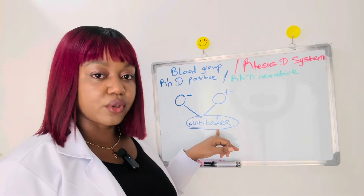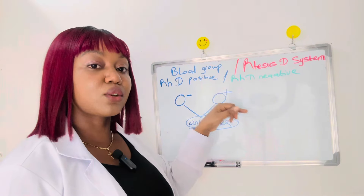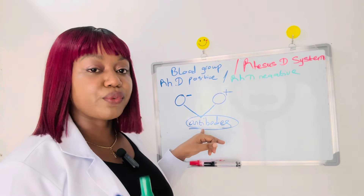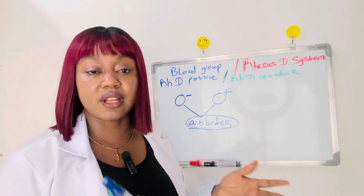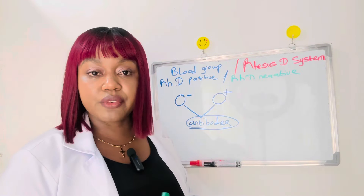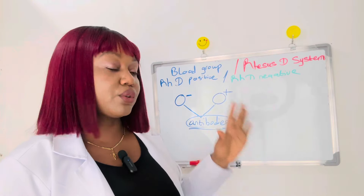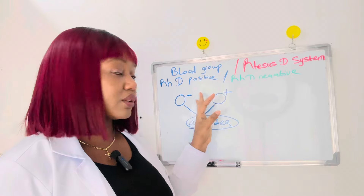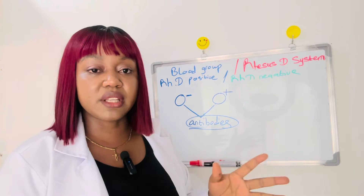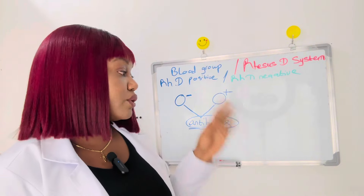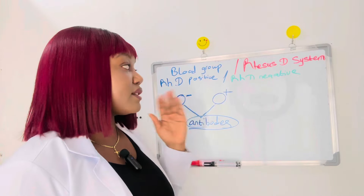In a second pregnancy with a Rhesus positive baby, those maternal antibodies will enter the baby's blood and start causing clotting and agglutination, which can be fatal for the baby. However, with recent technology this has been solved. When a pregnant lady is found to have incompatible Rhesus factors, the gynecologist will give her a medication to prevent this reaction from taking place.